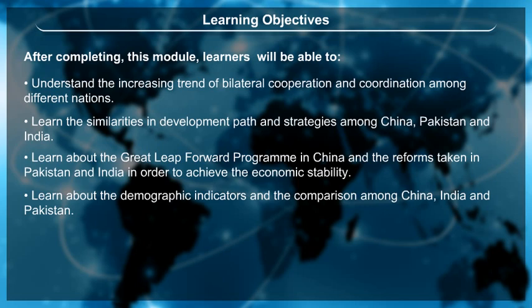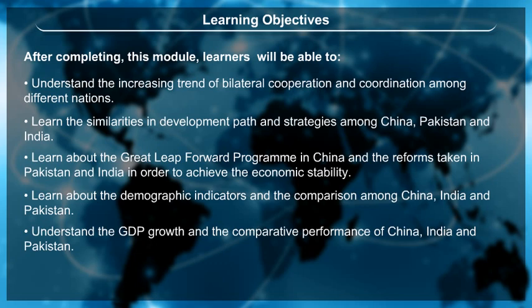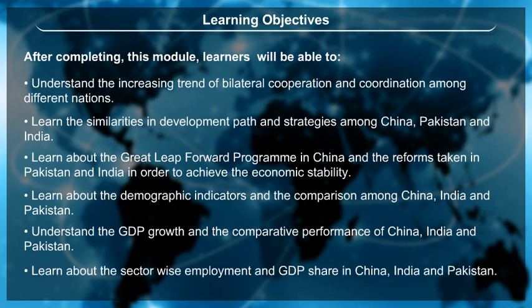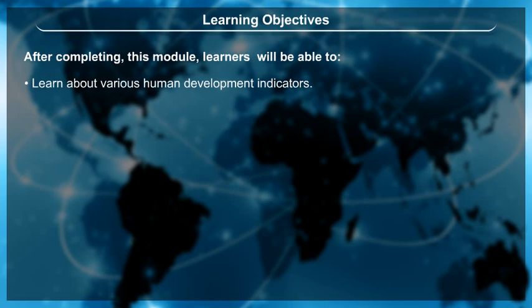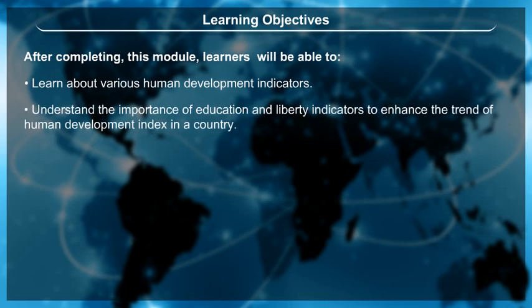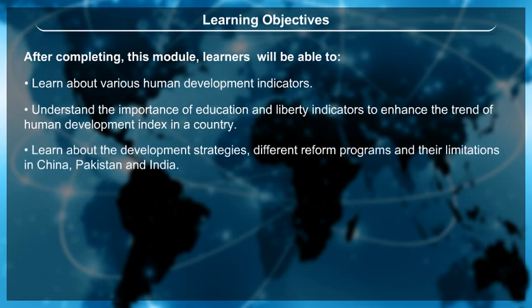Learners will learn about the Demographic Indicators and the comparison among China, India and Pakistan, understand the GDP growth and the comparative performance of these three nations, and learn about sector-wise employment and GDP share. They will also learn about various Human Development Indicators, understand the importance of education and liberty indicators to enhance the Human Development Index, and learn about development strategies including reform programs and their limitations in China, Pakistan and India.